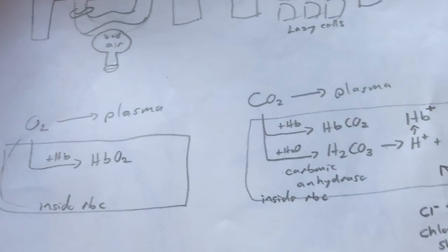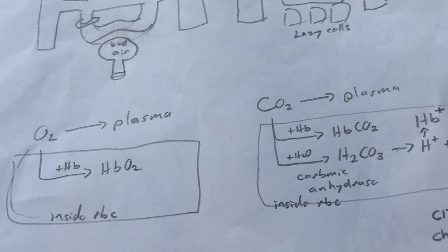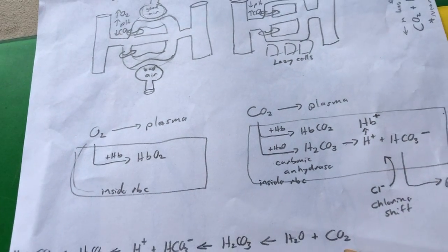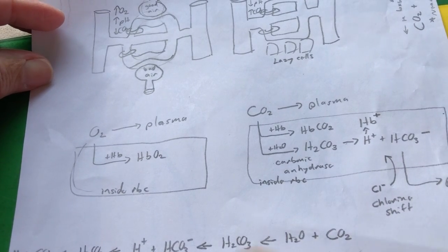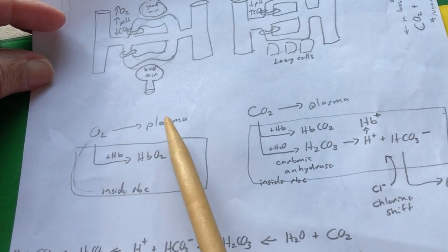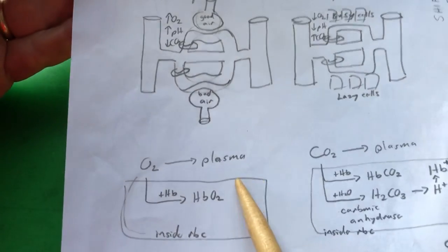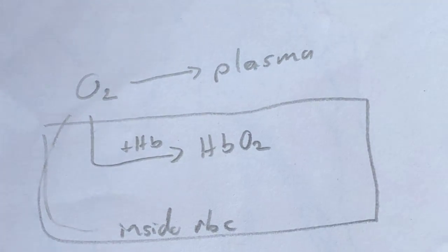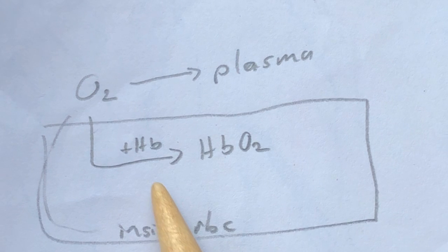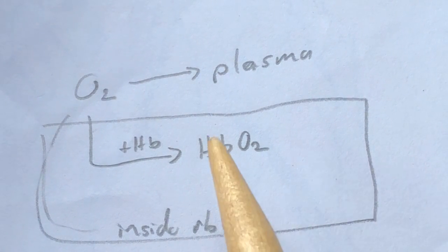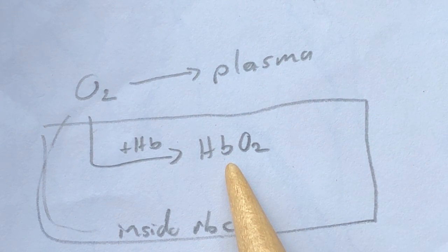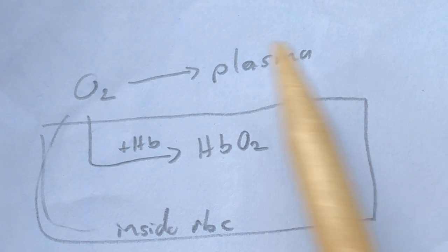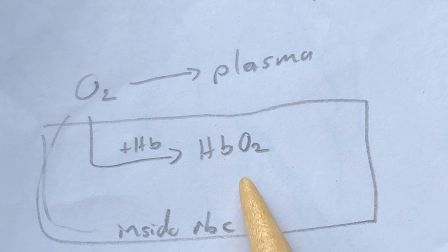When it comes to moving oxygen, some oxygen can dissolve inside the plasma, but only about two percent of the oxygen that moves through the blood actually travels through the plasma. The majority of the oxygen enters the red blood cell, combines with hemoglobin, and becomes oxyhemoglobin. So about 98 percent of the oxygen is carried as oxyhemoglobin. This is what's happening in the area of the pulmonary capillaries.